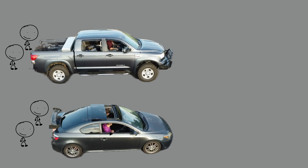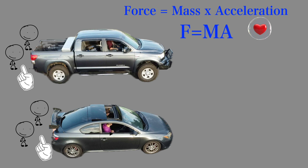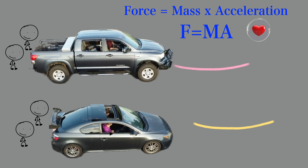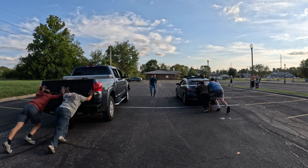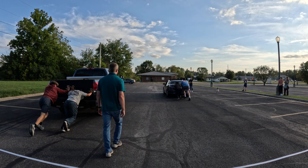Some people think Newton's second law is going to be complicated because it's a formula, but really the formula is just an explanation of a beautiful relationship between three different things: the force applied to an object, the mass of that object, and how much it will accelerate. Notice how in the first race both vehicles have the same amount of force applied — let's say each person could push with a force of 10, so a total force of 20 is applied to each car.